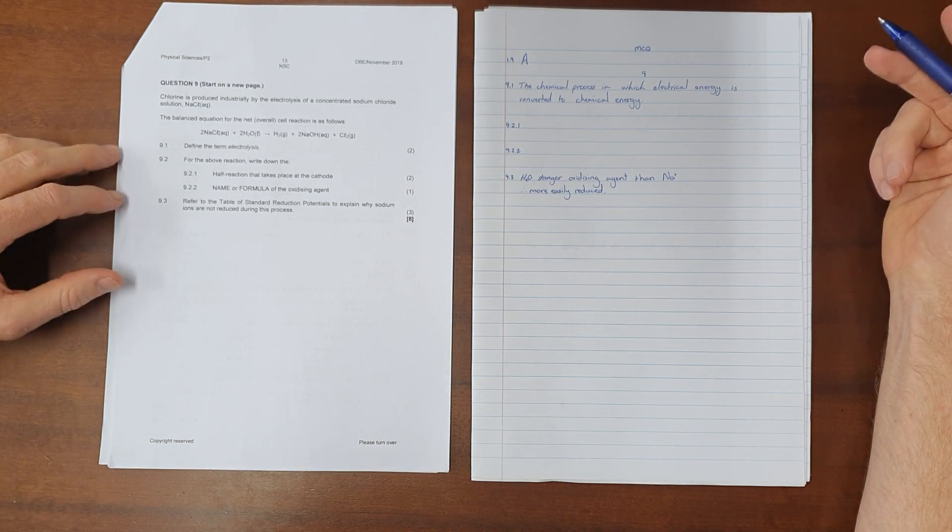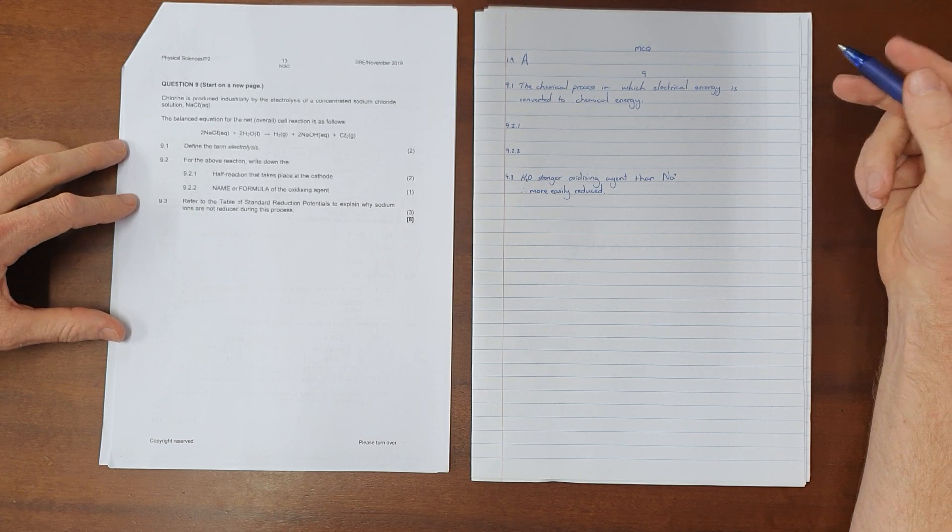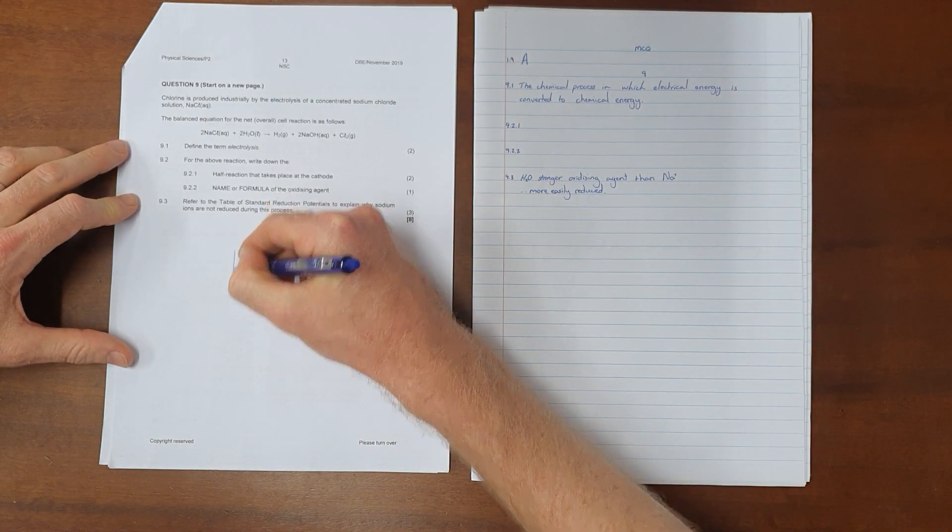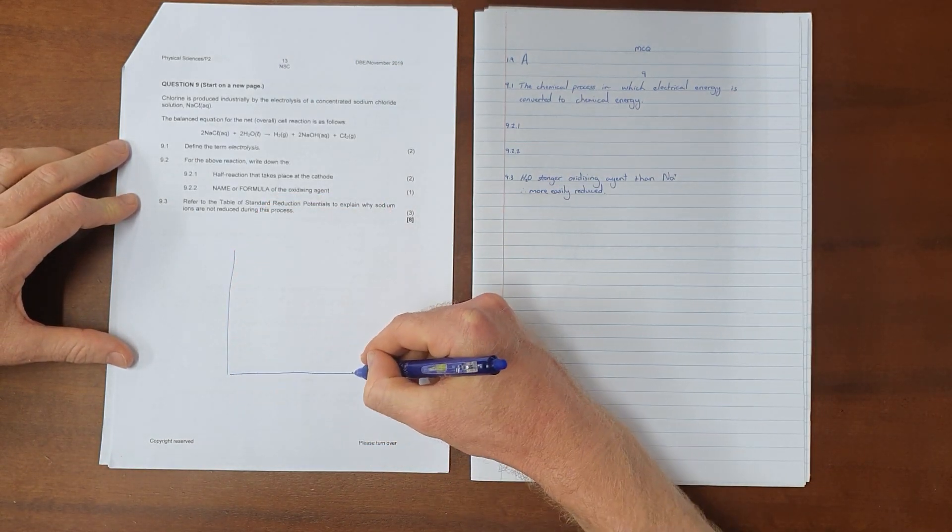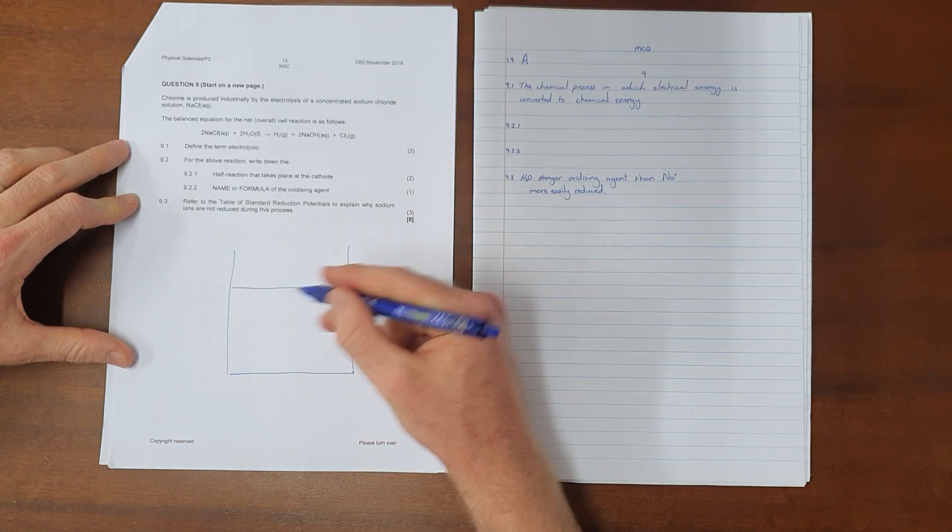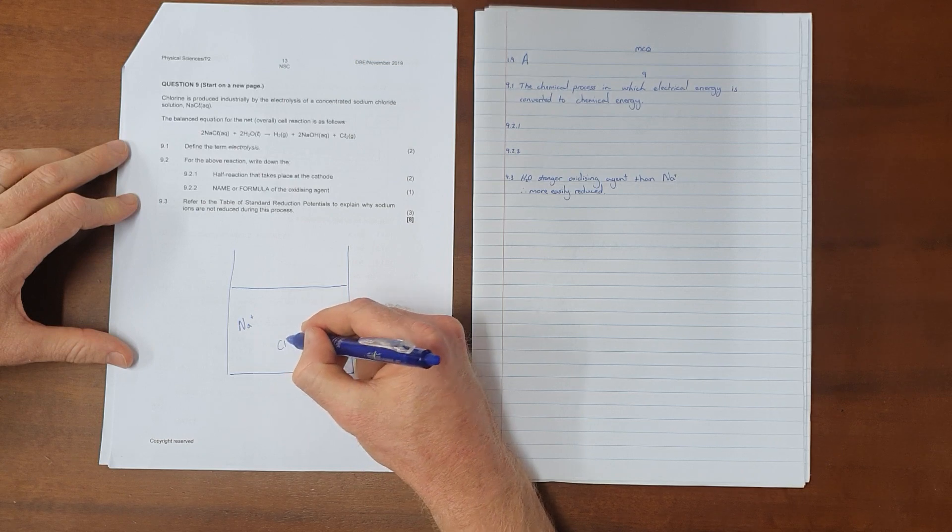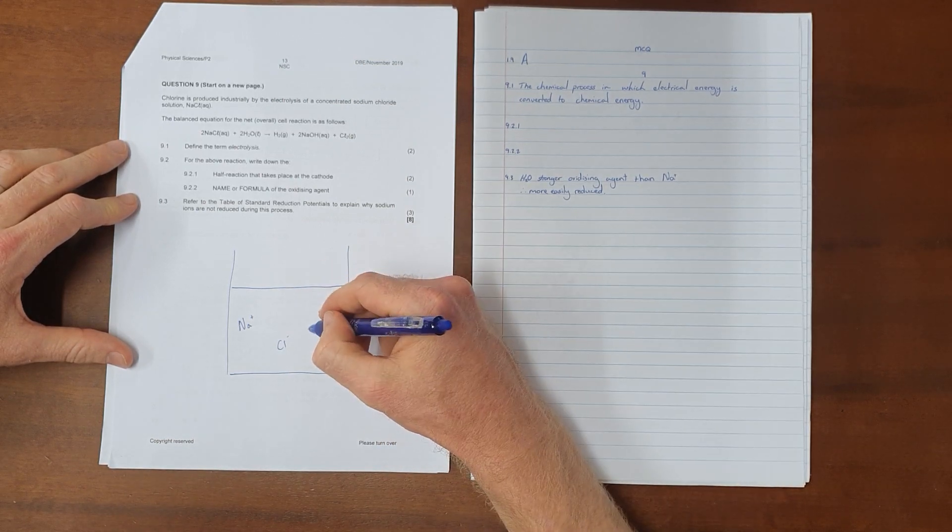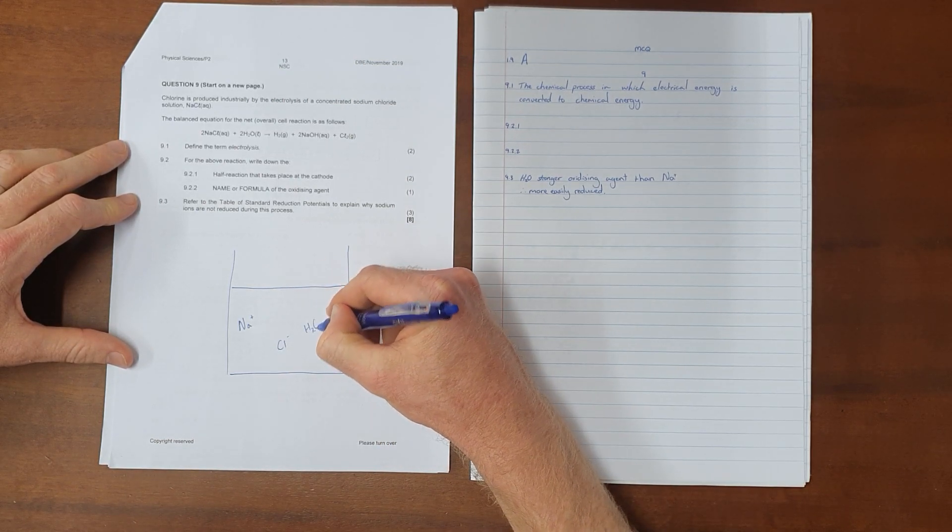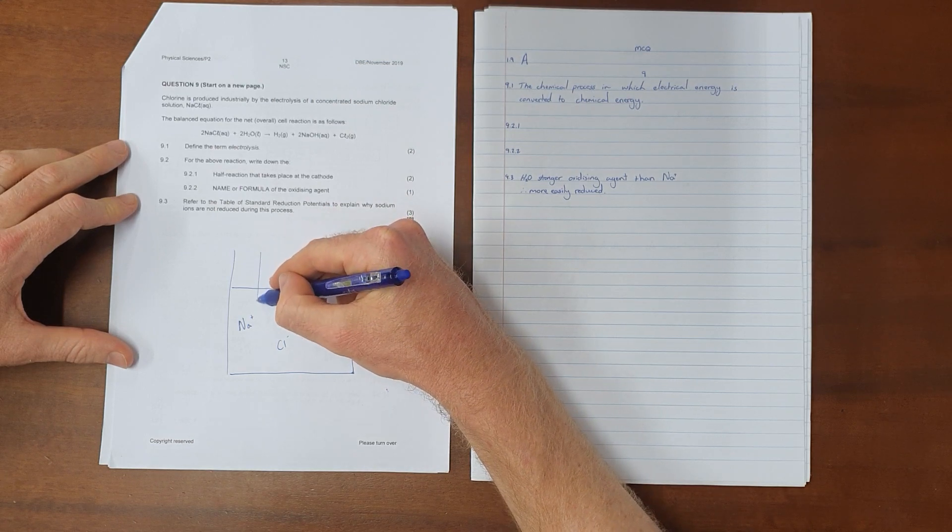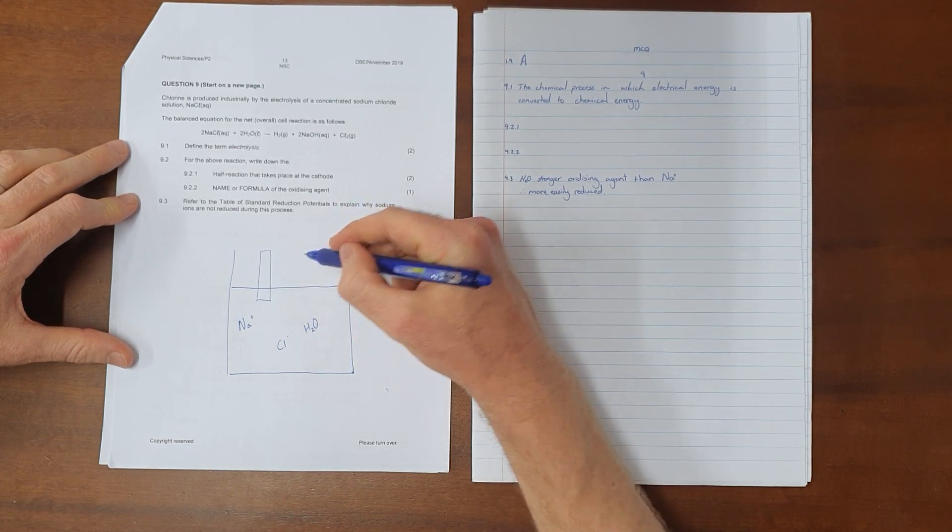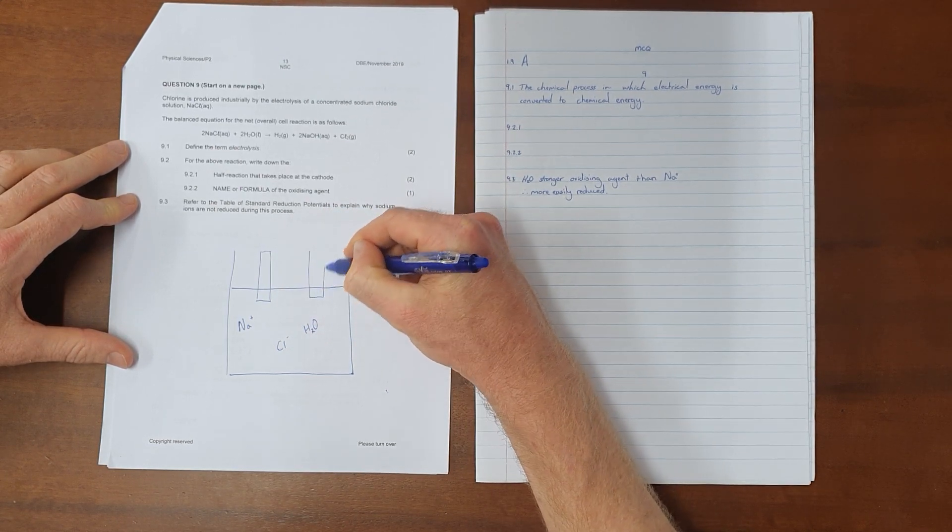Question 9.2: For the above reaction, write down the half reaction that takes place at the cathode. It always helps to draw a diagram here, where we have a solution that is going to contain sodium ions, chlorine ions, and water molecules. We know that this is going to have two electrodes inserted into it.